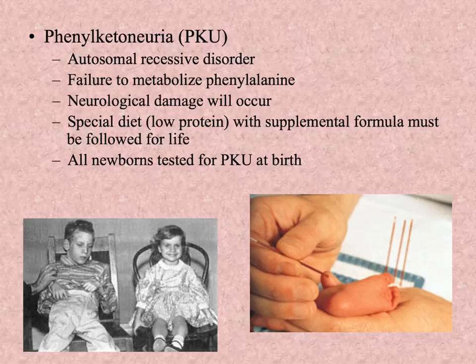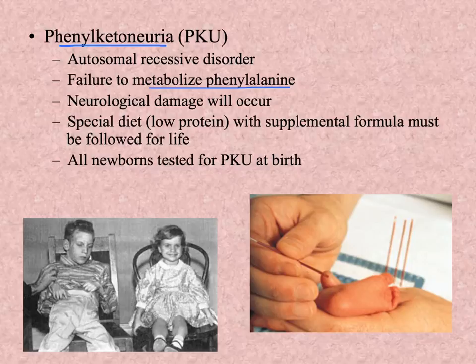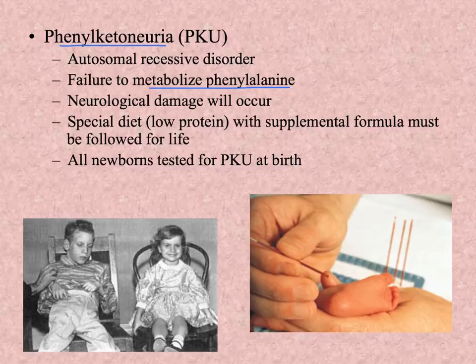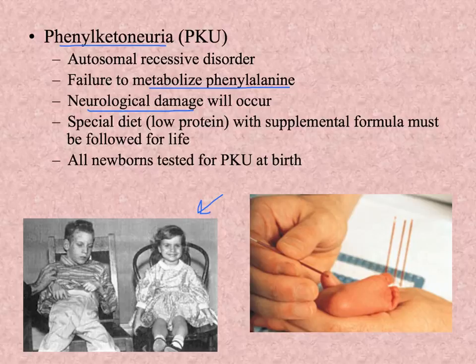The first example is PKU, or phenylketonuria, which is an autosomal recessive disorder — parents have to be carriers for it to show up in their children. The issue is it's lacking the enzyme that will metabolize excess phenylalanine. Phenylalanine is an essential amino acid and part of our body's proteins, but we typically take in more than we need, so we must have this enzyme to break down the excess.